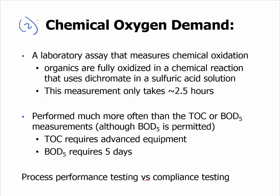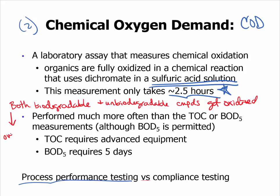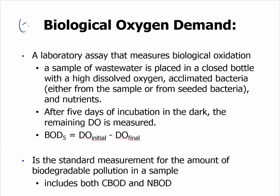The second way that we discuss oxygen demand is the chemical oxygen demand or COD. This is a laboratory test that utilizes sulfuric acid, a strong oxidant. The test takes 2.5 hours for the oxidation, and a dichromate is used to measure a UV change. With this, you get some indication of the components in the water that can be oxidized. This is performed much more often than the other measurements and is a critical aspect of process performance testing, mostly because of the short time the test takes. One thing to note is that both biodegradable and unbiodegradable compounds will be oxidized chemically, so COD overestimates the biological demand.